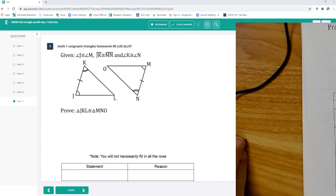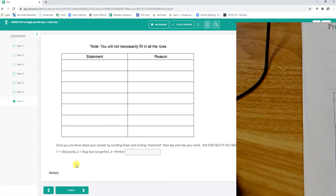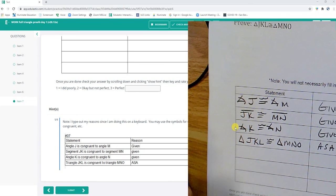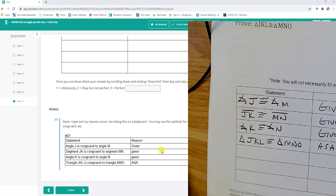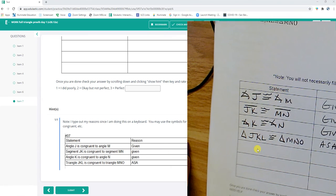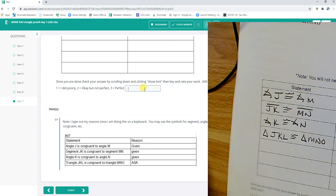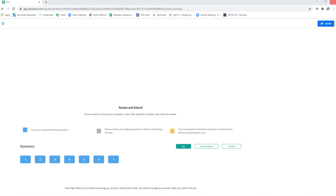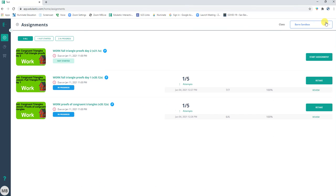Let's check it. J to M, JK to MN, K to N, JKL, MNO, ASA, given, given, given. That's it. All right, thank you for watching. Let me submit this thing. And looks good. Thanks for watching.